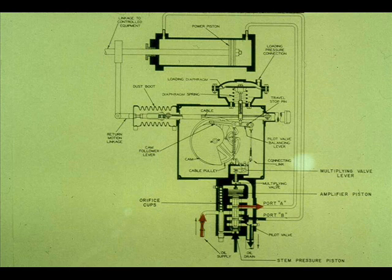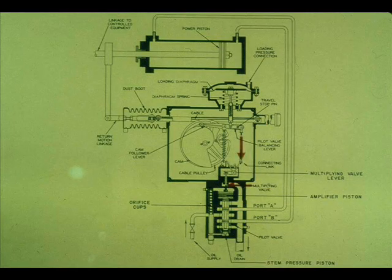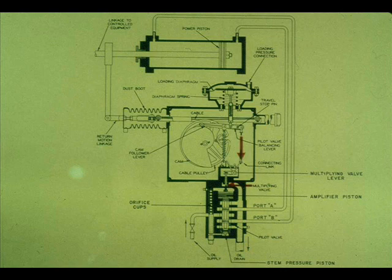Now let's see what happens upon an increase in the instrument signal. The connecting link lowers. This opens the multiplying valve. The amplifier piston is forced up. Port A is connected to supply. Port B is connected to drain.